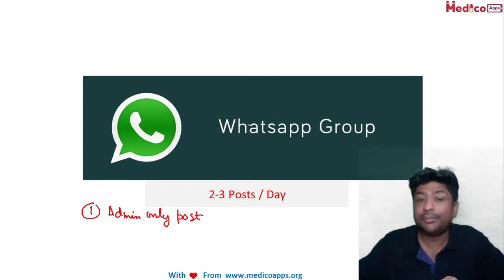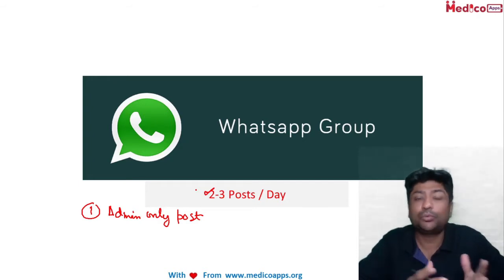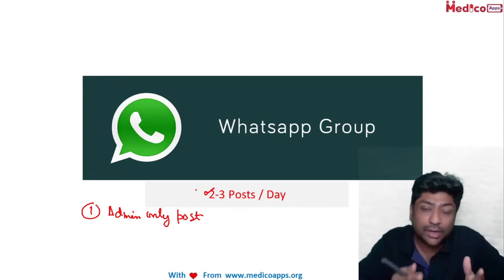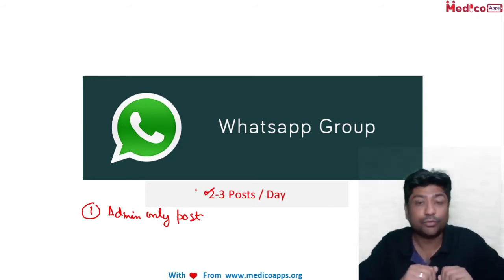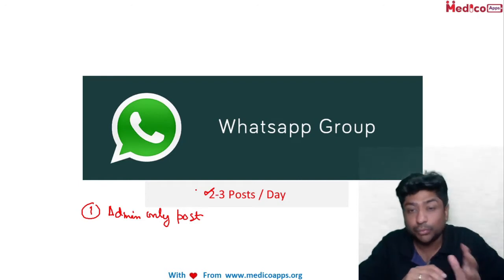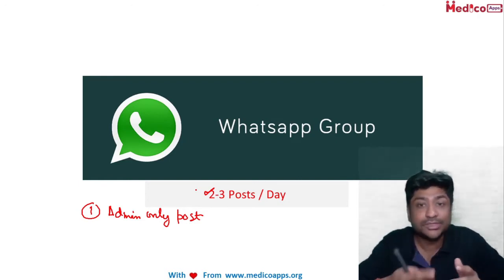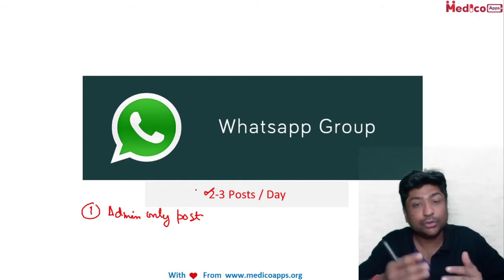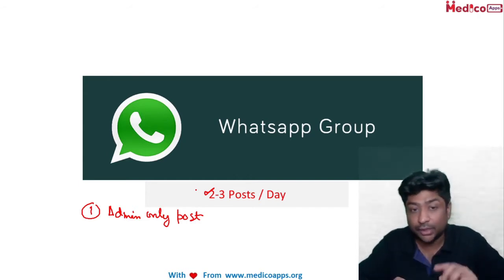How many updates do we generally post? We post around 2-3 posts a day. The best part about the WhatsApp group is that if you don't like an update, you can always exit. You can mute the group, or even if you visit the group after two or three days, you can see all the posts and always learn from them.